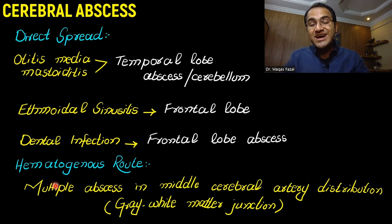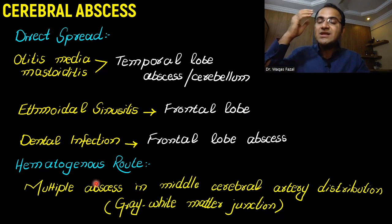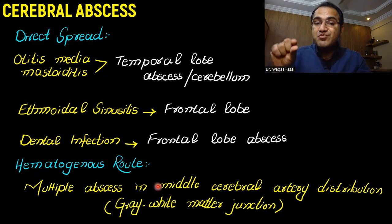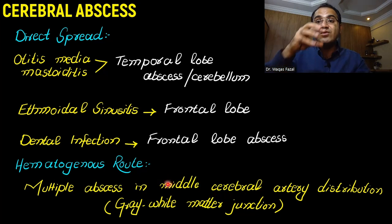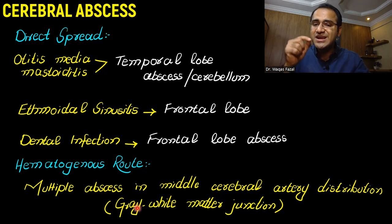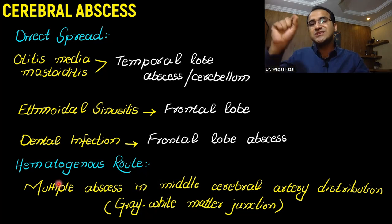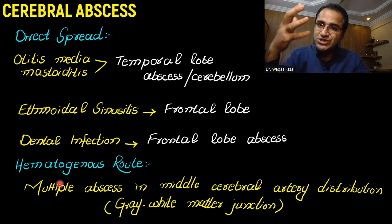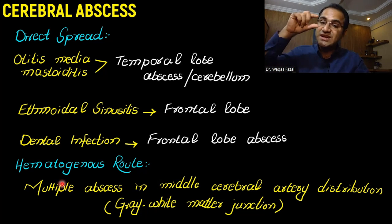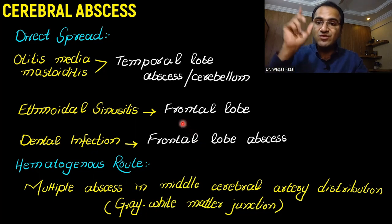Cerebral abscess can also occur due to the hematogenous route. In the hematogenous route, the blood carries the bacteria to the brain, and that abscess will be present around the middle cerebral artery. There will be multiple abscesses in the region of middle cerebral artery distribution at the gray-white matter junction. That is a classical presentation of hematogenous spread — whenever blood carries infection, the abscesses will be seen around the middle cerebral artery.